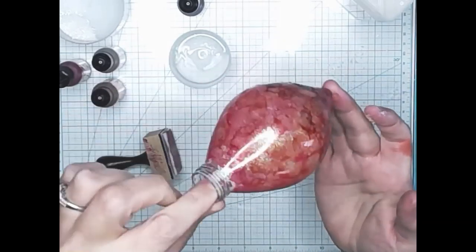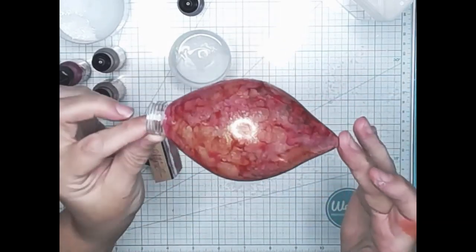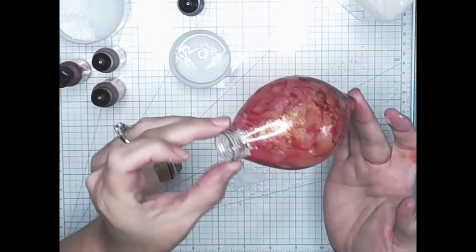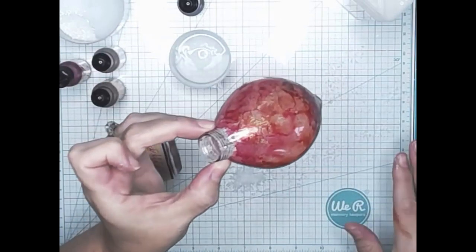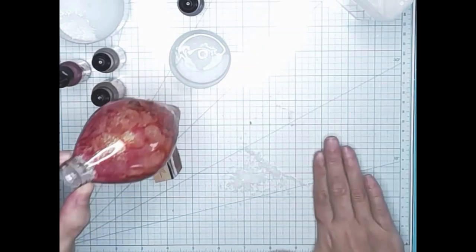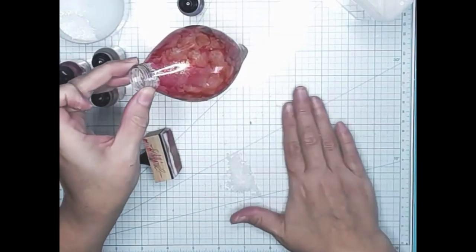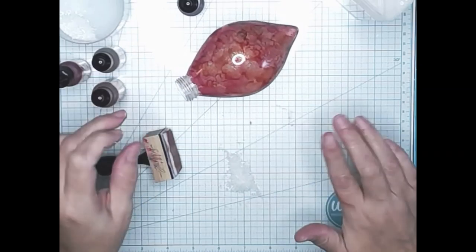All right, and there we go. We have our beautiful red marbled ornament. And then I'm going to go back in and just add a little bit more glitter. We had a little bit fall out. Then let that sit in there, set up real nicely, and that ornament will be done.